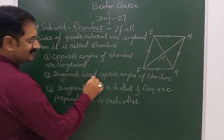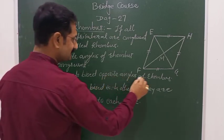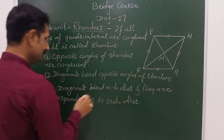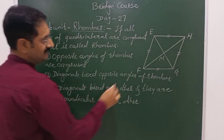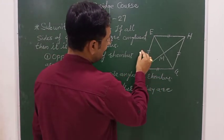The second property is: diagonals bisect opposite angles of the rhombus.